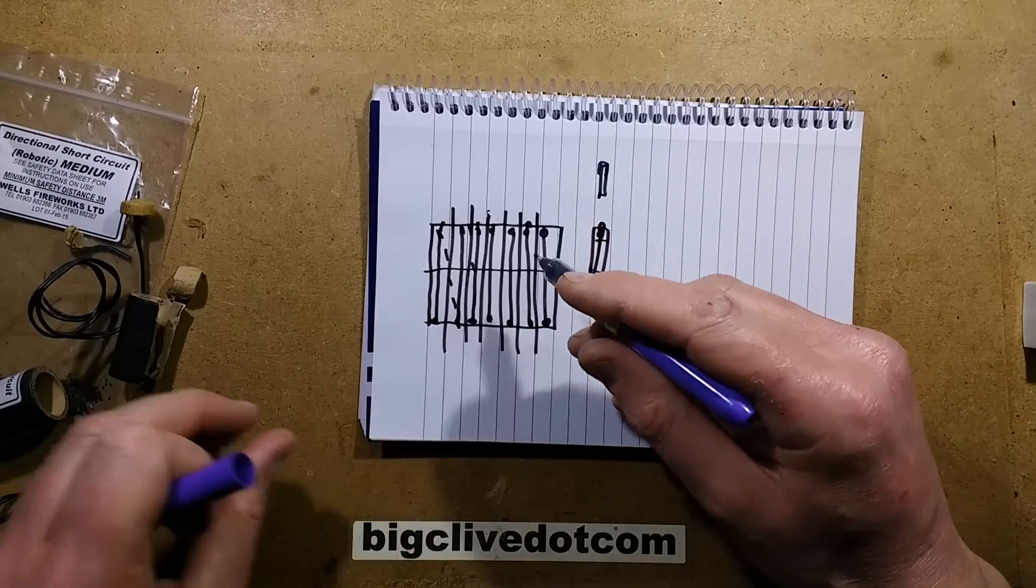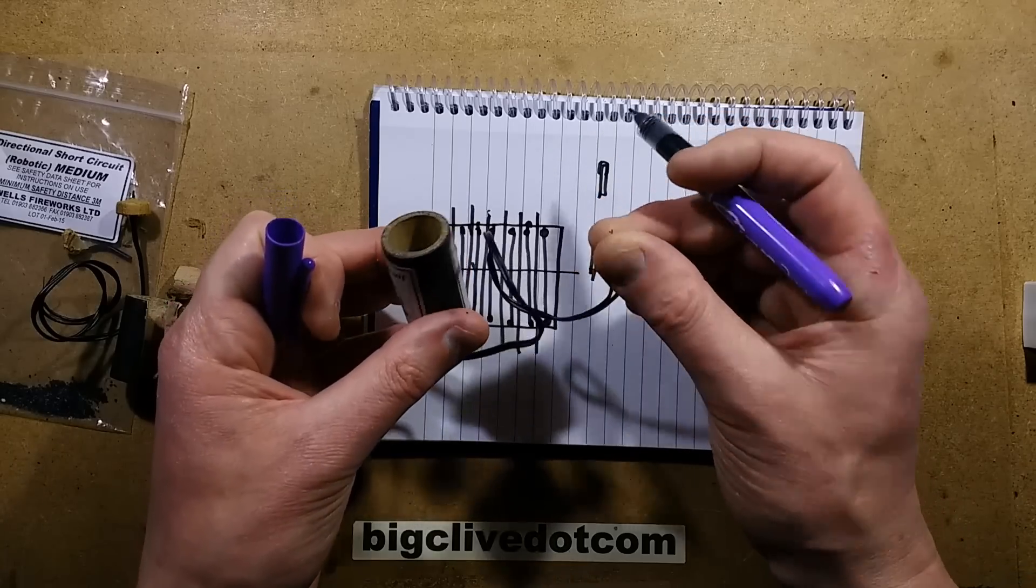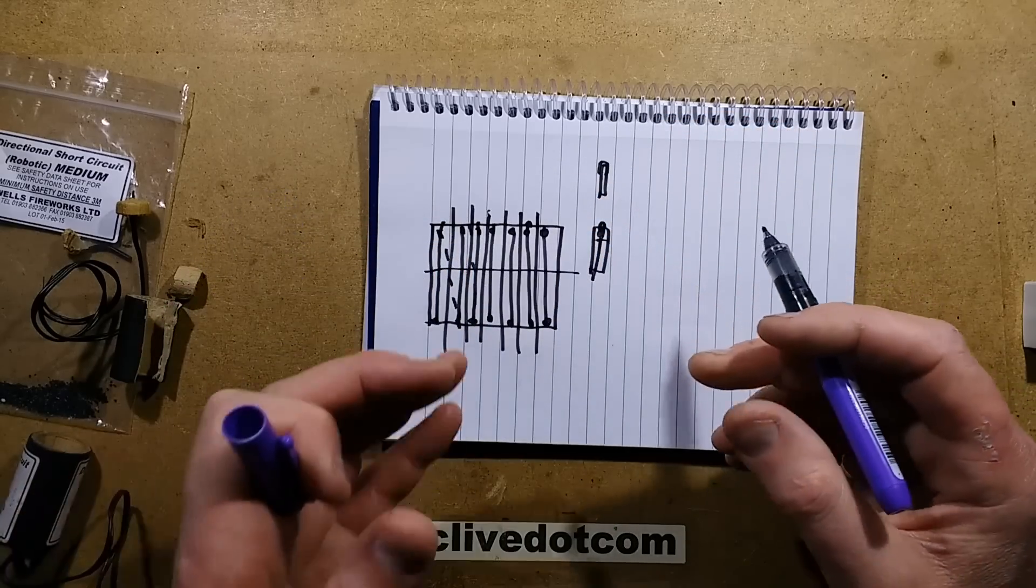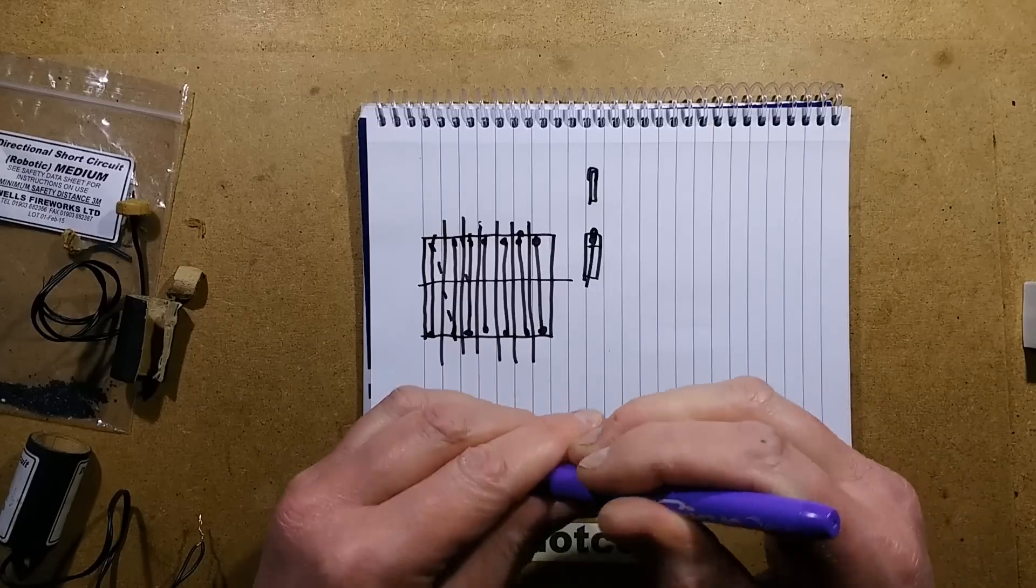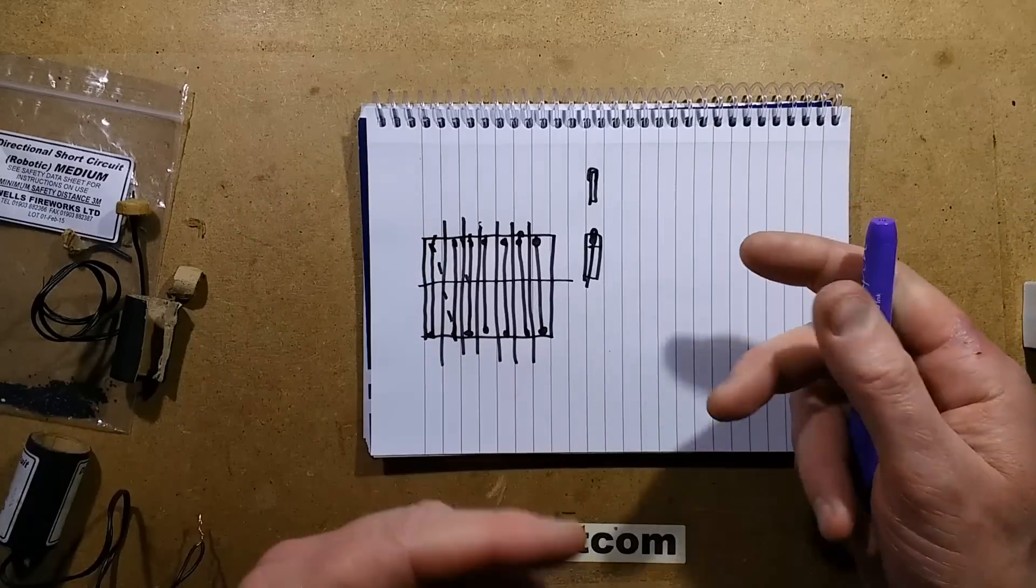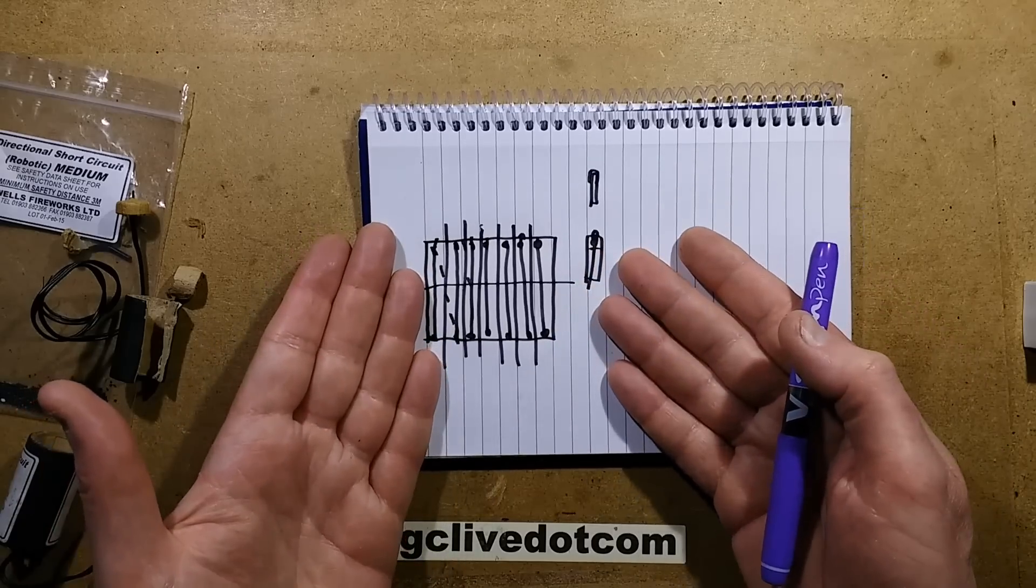And it's worth mentioning the resistance of these is typically in the region of about one ohm. They're very low resistance. Ultimately, that's a safety feature. It's an easy way to trigger them because they pass a lot of current. But it also means that they're less susceptible to false triggering.